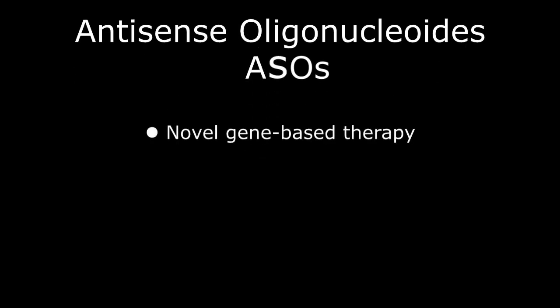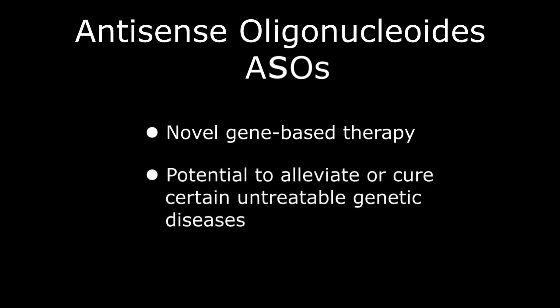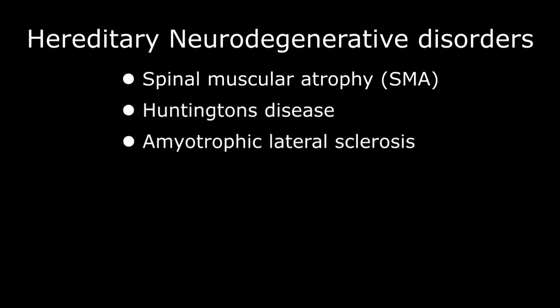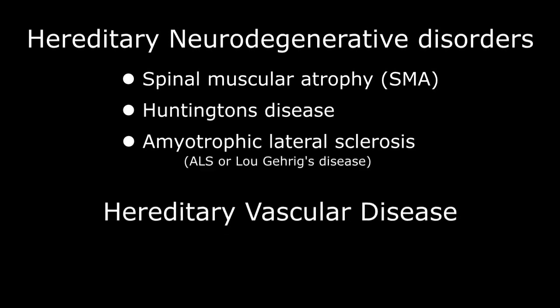Anti-sense oligonucleotides are a novel gene-based therapeutic technology that has the potential to alleviate or possibly cure a set of currently untreatable and progressive genetic diseases, including hereditary neurodegenerative disorders such as spinal muscular atrophy, Huntington's disease, and amyotrophic lateral sclerosis or Lou Gehrig's disease. Certain hereditary risk factors for coronary artery disease such as lipoprotein A may also benefit from this technology.